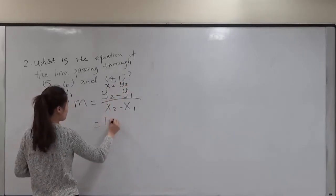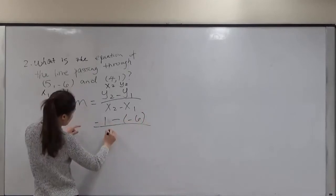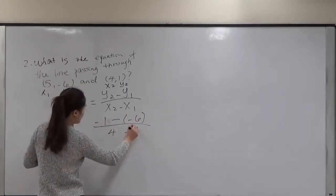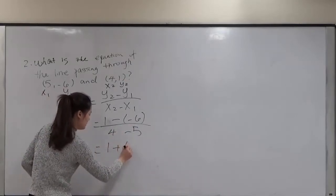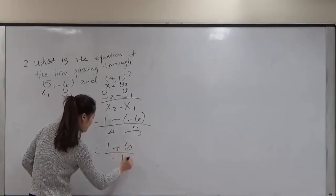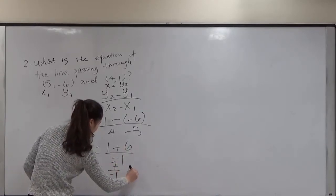So 1 minus negative 6 over 4 take away 5. 1 plus 6 over negative 1. We have 7 divided by negative 1 equals negative 7.